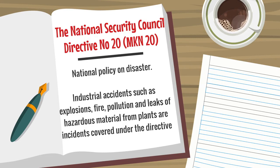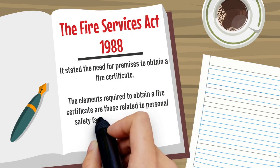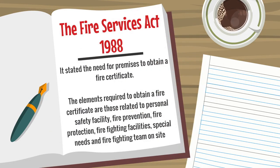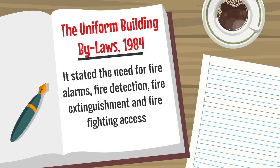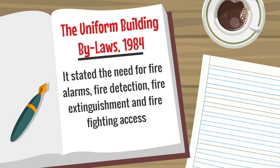Thirdly, the Fire Services Act 1988, which states the need for premises to obtain a fire certificate. Next, the Uniform Building By-Laws 1984, which states the need for fire alarms, fire detection, fire extinguishment, and fire-fighting access.